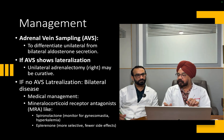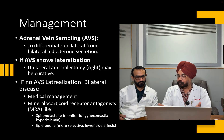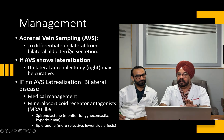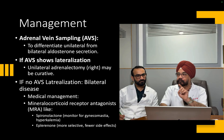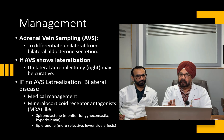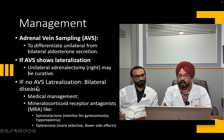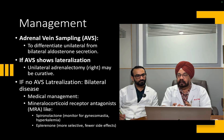With adenomas on both sides, we cannot remove both adrenals — that would be life-threatening. So we perform adrenal vein sampling to determine which side is producing more aldosterone. The dominant adenoma is then surgically removed. In about 70% of patients, removing that adenoma resolves hyperaldosteronism. If there is no lateralization, medical therapy with mineralocorticoid receptor blockers is continued.